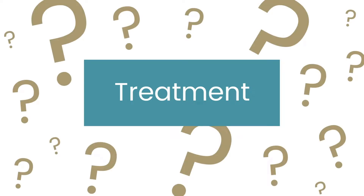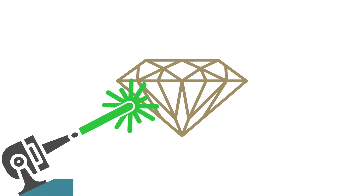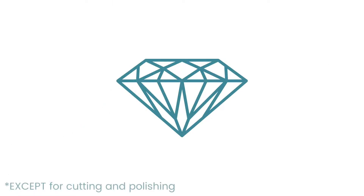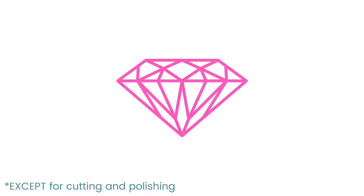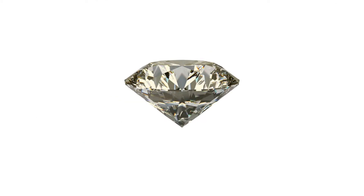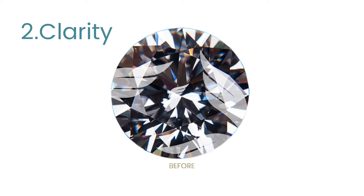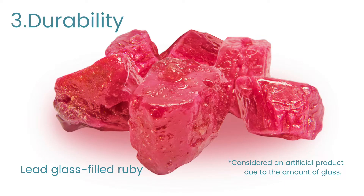So what is a gem treatment? A treatment is any artificial process that a gem has been subjected to that alters its appearance or properties. The most common purpose for treatment is to alter the colour of the gem, to improve the gem's clarity, or to increase its durability so that it can be fashioned and used in jewelry.